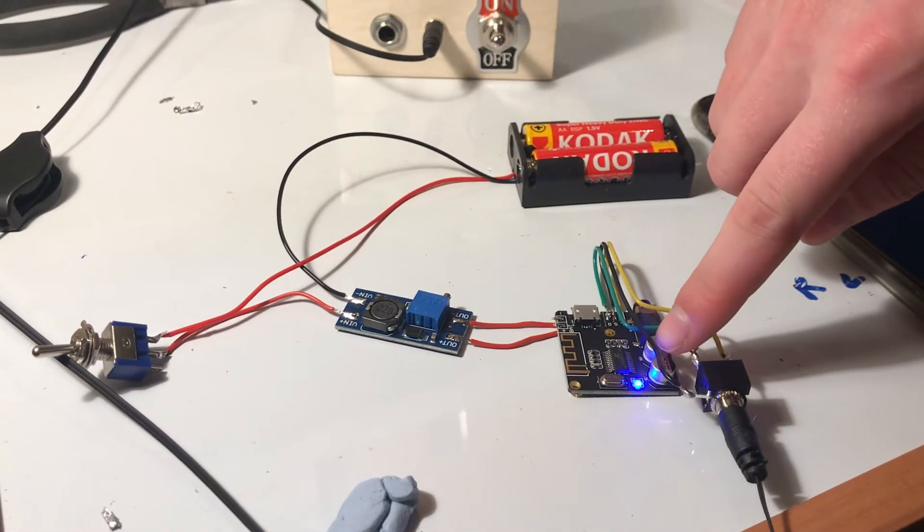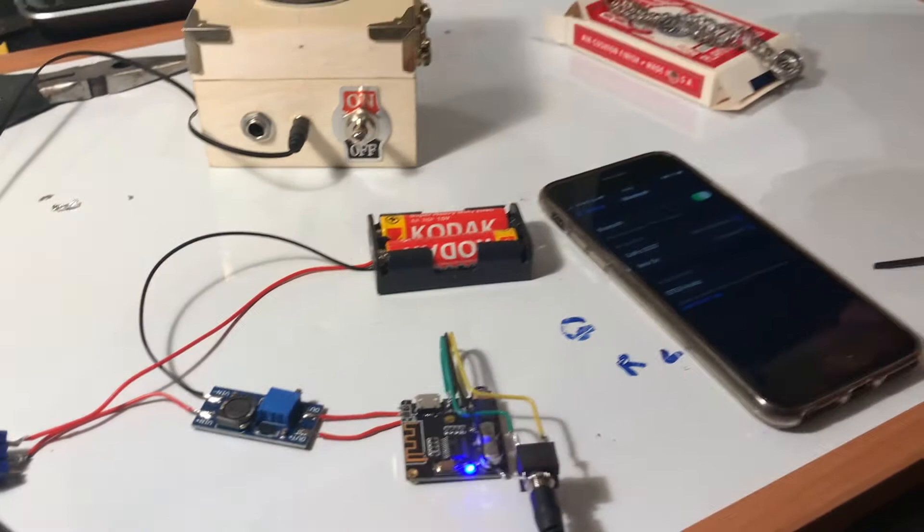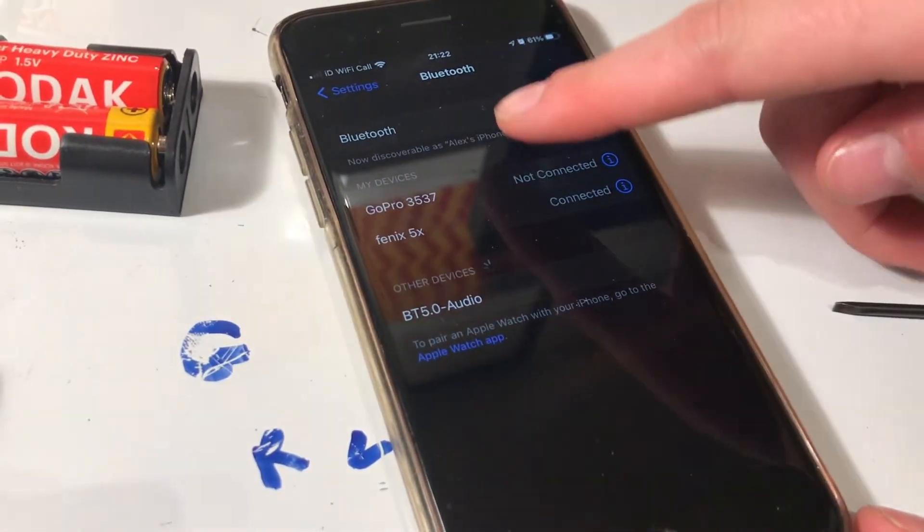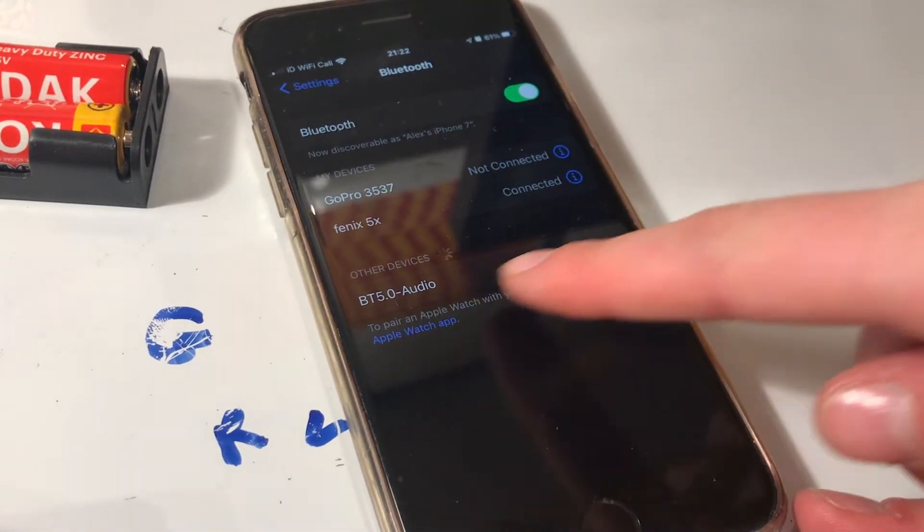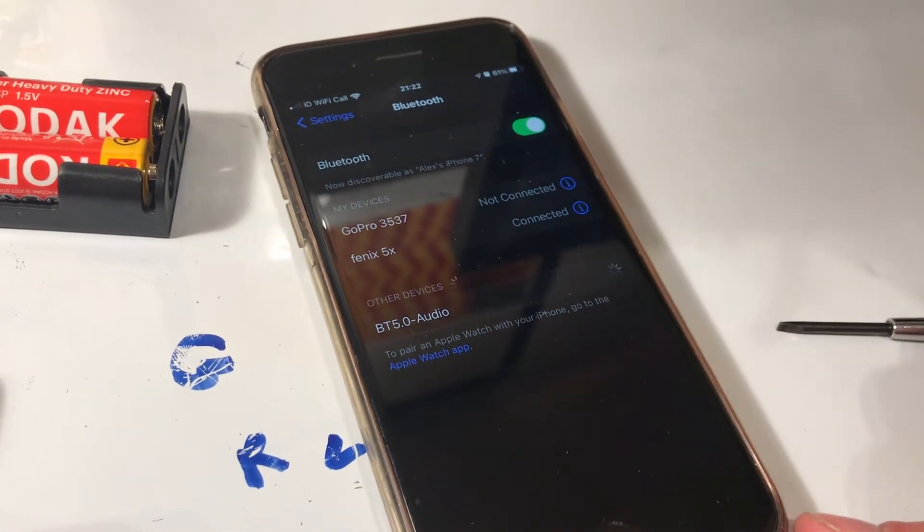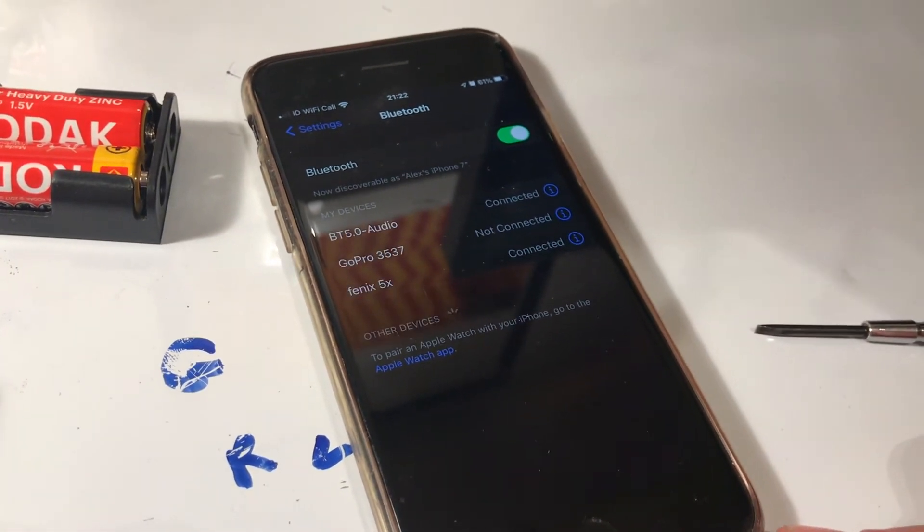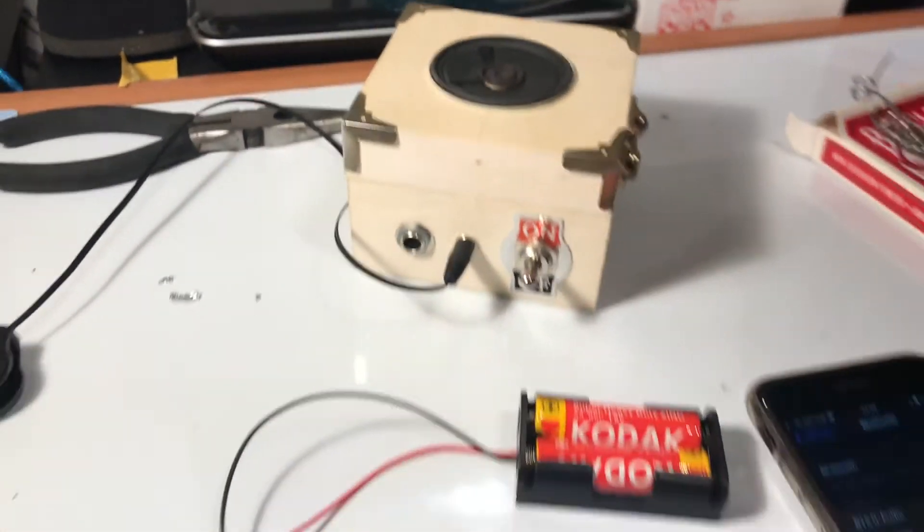And then on our phone, we've got Bluetooth and settings. We can see here our Bluetooth module. So we'll just click on that to connect. Bluetooth connected. That's pretty cool.